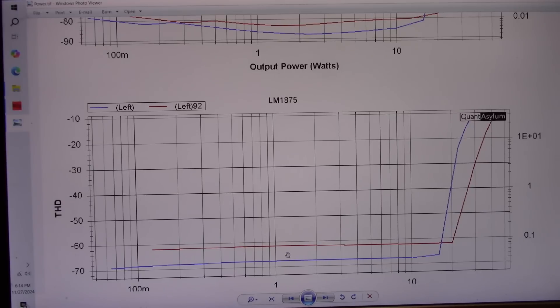Okay, so now with the LM1875, the distortion is higher. It's very flat across the power band. But it's 0.1 instead of 0.01 that it's below, which is okay. I mean, I like to see it be below 0.1. But you know, that's still an order of magnitude above what the TDA2050 was.